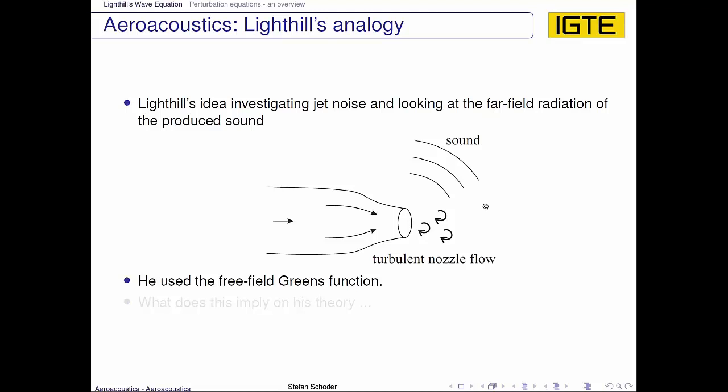The thing is now, what does his idea or the Green's function imply on his theory? So if we have some fluid streaming out of a nozzle, then we have some turbulent vortical jet and structure evolving after the nozzle, and these processes generate sound.